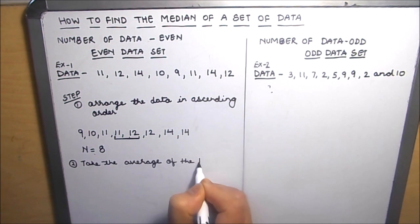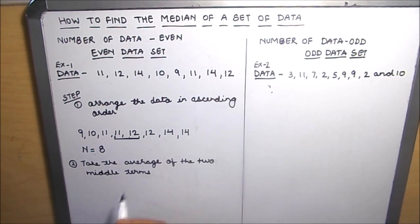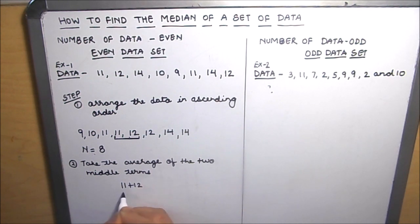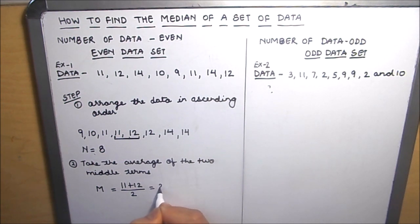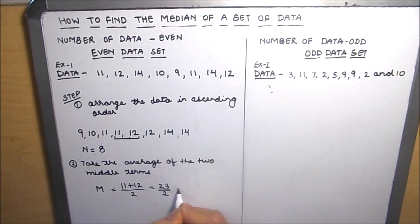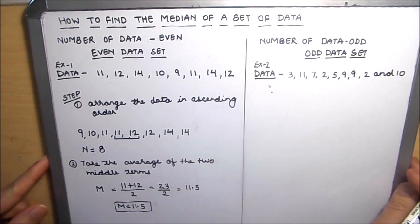The two middle terms are 11 and 12. So we will add the two terms and divide by 2 to find out the average, or the median, for this data set. Our average is 23 over 2, which is equal to 11.5. Now let's move on to the data set where the number of terms is odd.